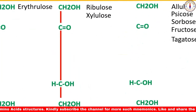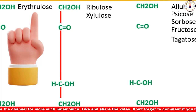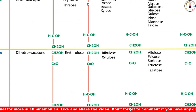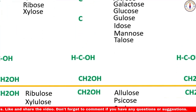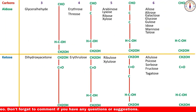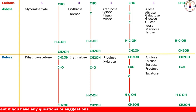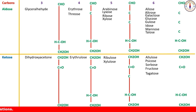Four-carbon ketoses already have four carbons, so no more are required. Erythrulose is the only four-carbon ketose and its structure is already complete. Five-carbon aldoses require two more carbons to complete the skeleton, while five-carbon ketoses require only one more carbon. For aldo-hexoses, three more carbons are needed, while keto-hexoses need only two more carbons since they already have four carbons. The skeletons of all six-carbon sugars are now completed.